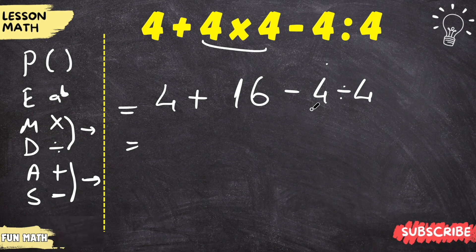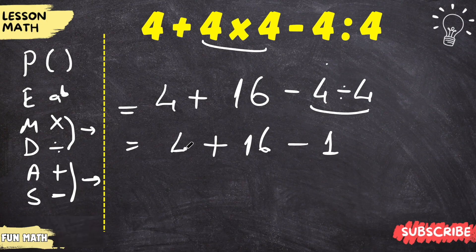Now we'll do the division. Divide 4 by 4, which is 1. Here is 16. What's left over? Addition and subtraction. What were we doing here? From left to right.